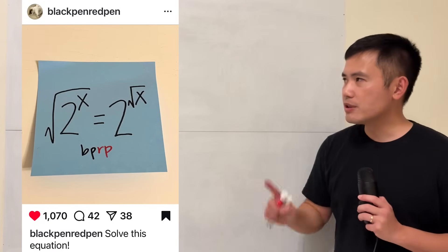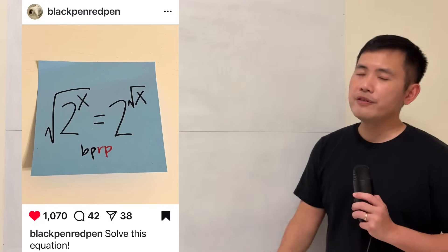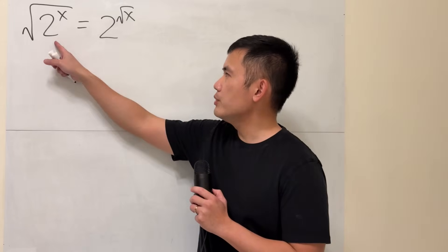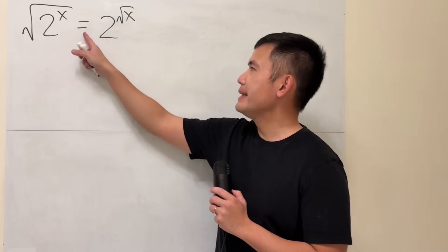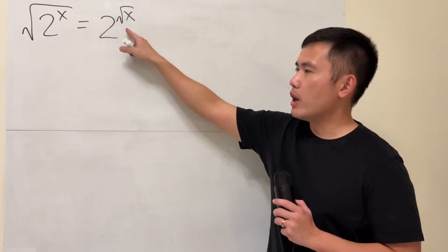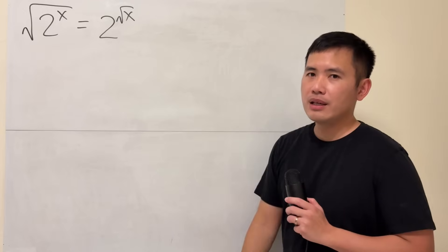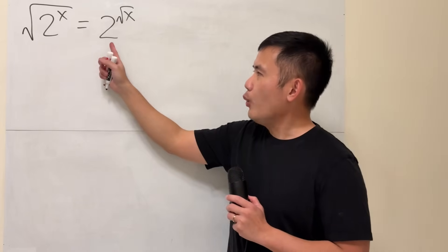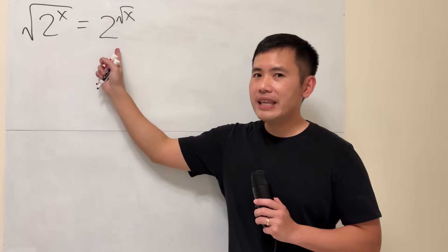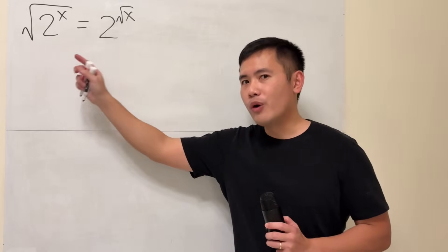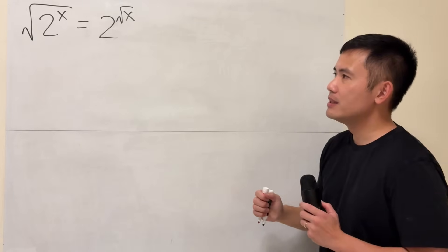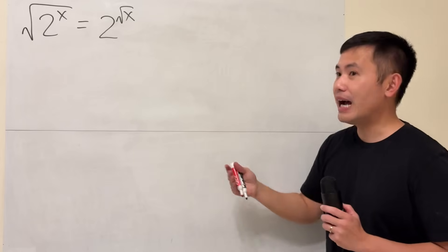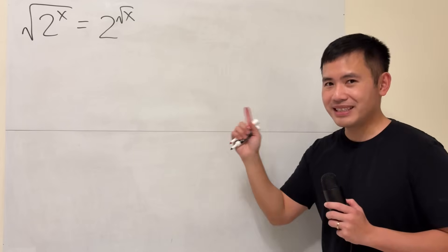I want to show you how to solve this equation from my Instagram. We have the square root of 2 to the x being equal to 2 to the square root of x. Notice that this is not always equal to that — they are equal for some x values. Maybe 1, maybe 2, I don't know. Maybe never. So let's take a look.